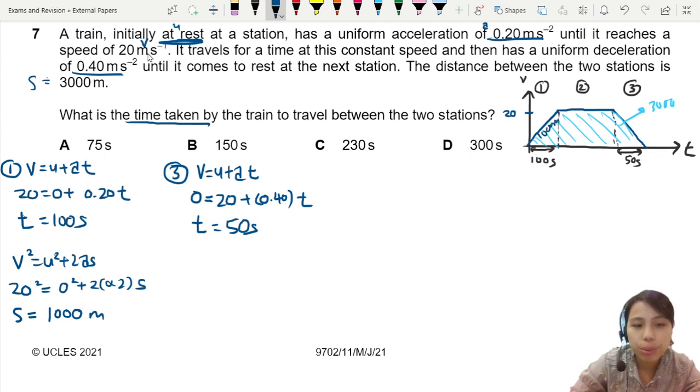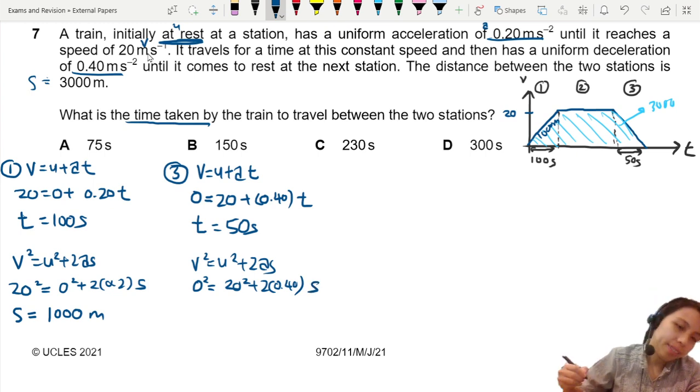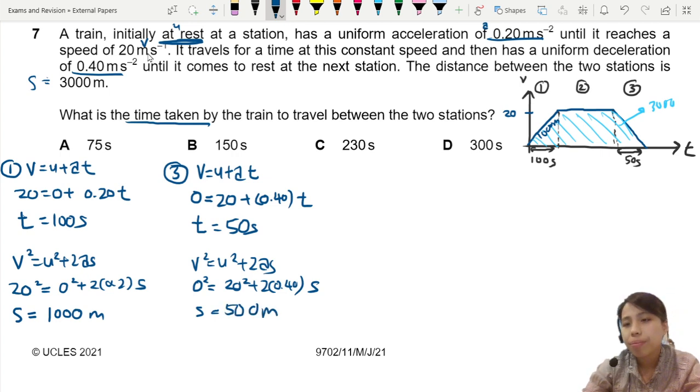Section 3, we do the same thing. V square equals to U square plus 2AS. Final speed, you stop moving. You start off at 20. And you decelerate by 0.4S. So this S here. Wait, what is S? 500 meter. So here already 500 meter.